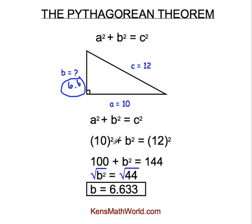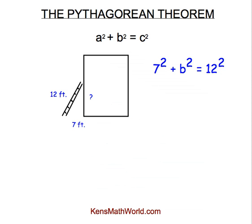I want to show you one more example. This example is an application of the Pythagorean theorem. Suppose we have a building here and a ladder leaning up against the side of the building. Let's suppose that the ladder extends 7 feet from the base of the building. Notice here we have a right triangle.